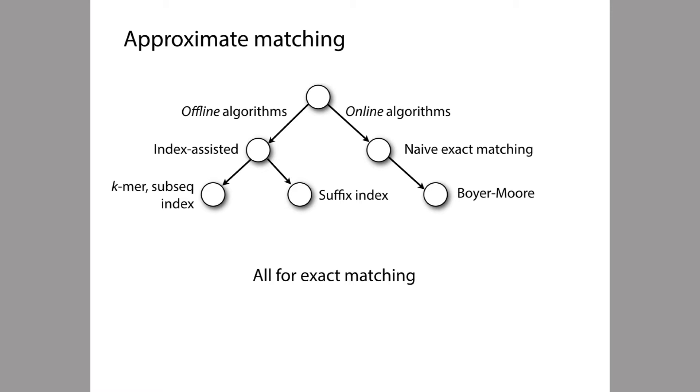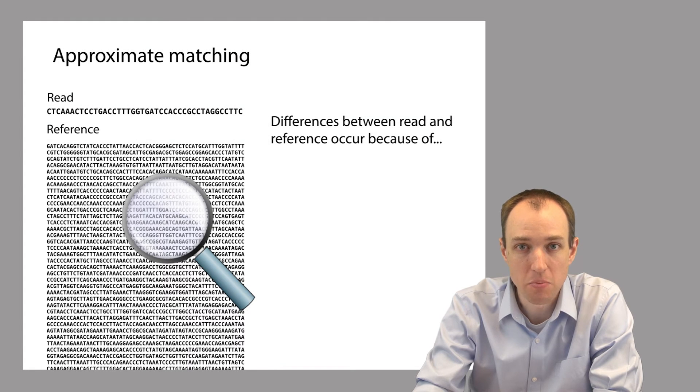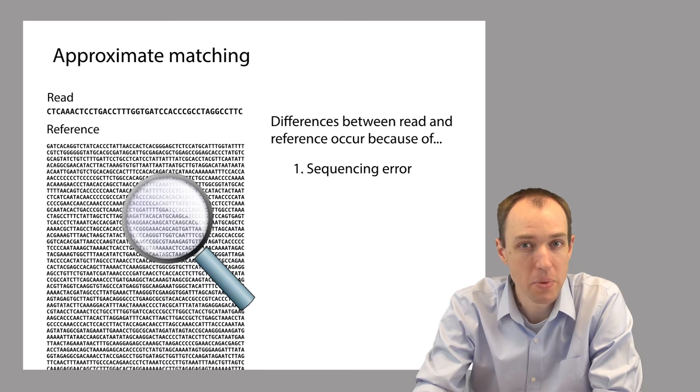There are a couple of reasons why we expect there to be differences between the read and the reference genome. One of the reasons we might expect differences between the read and the reference is because of sequencing errors. Sometimes the sequencer will make mistakes. It will miscall a base in the sequencing read, and when that happens, that base might no longer match the reference genome.